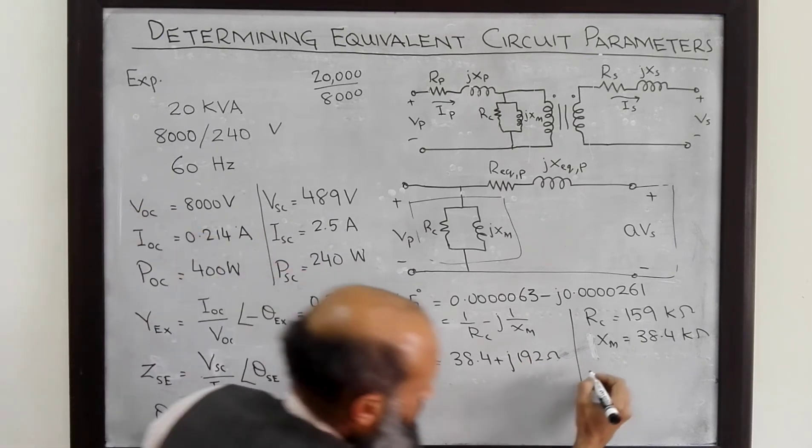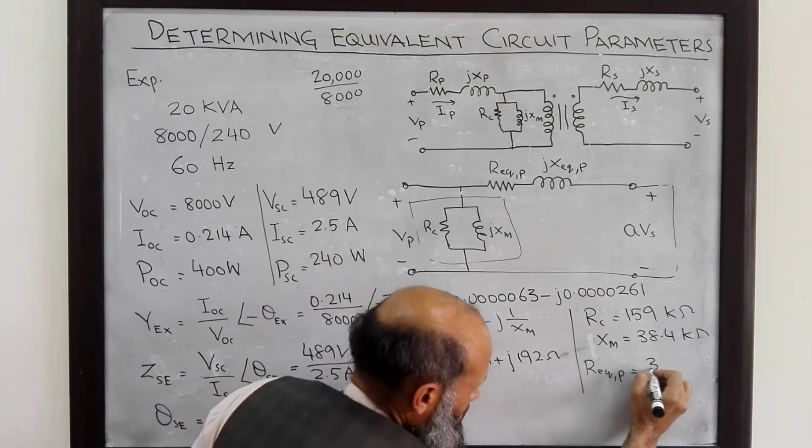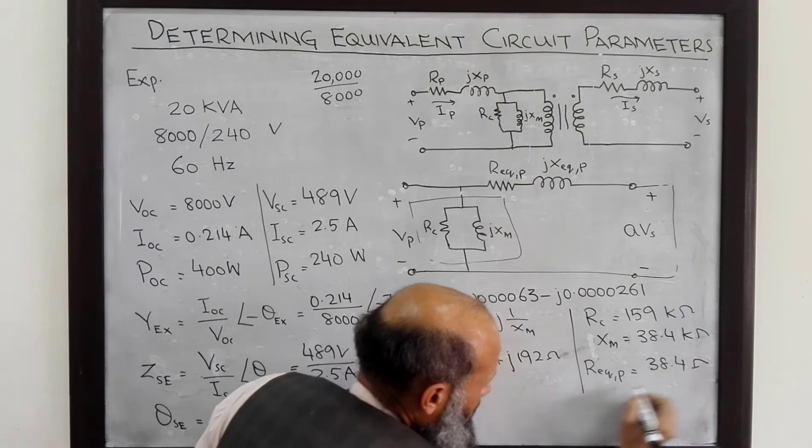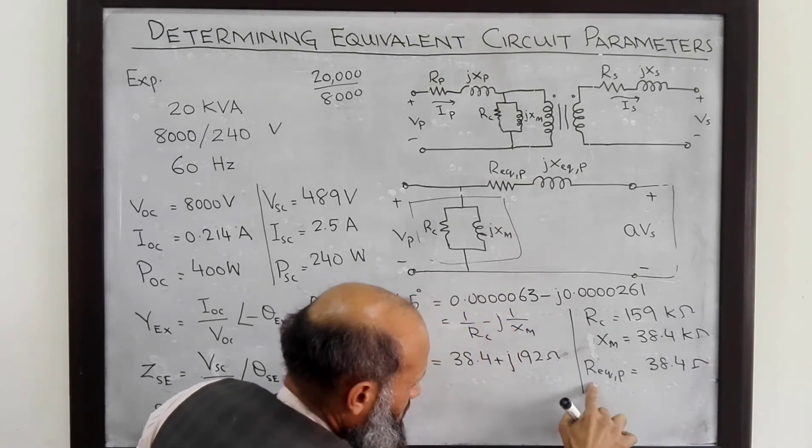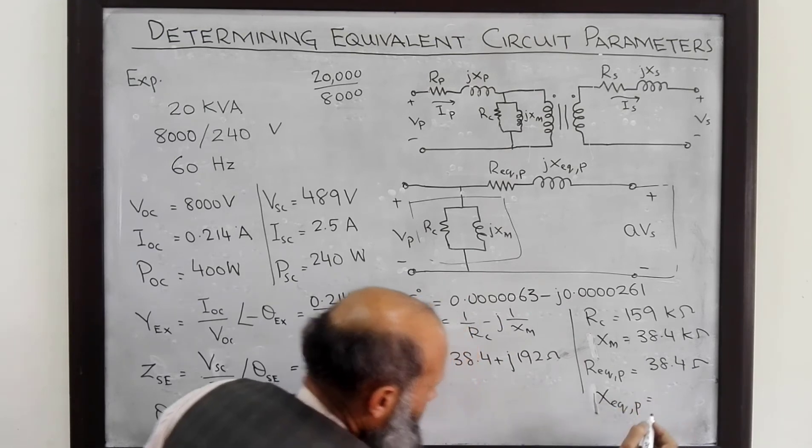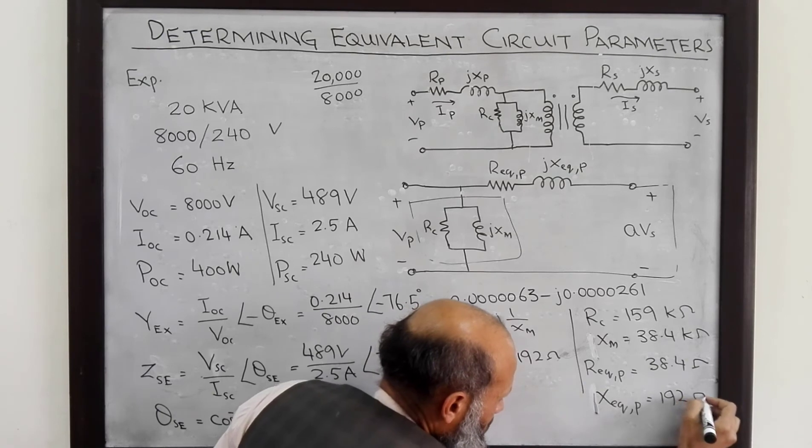Therefore, our R equivalent referred to primary, that is equal to 38.4 ohms and X equivalent referred to primary side, that is 192 ohms.